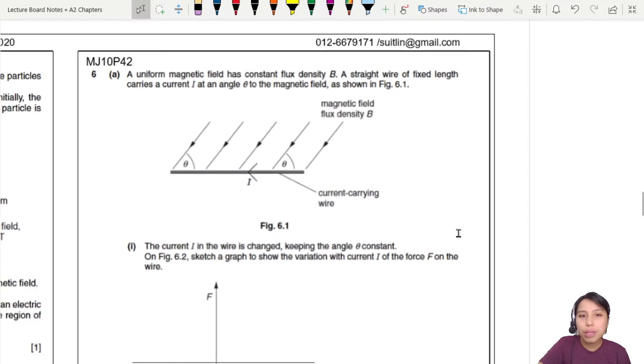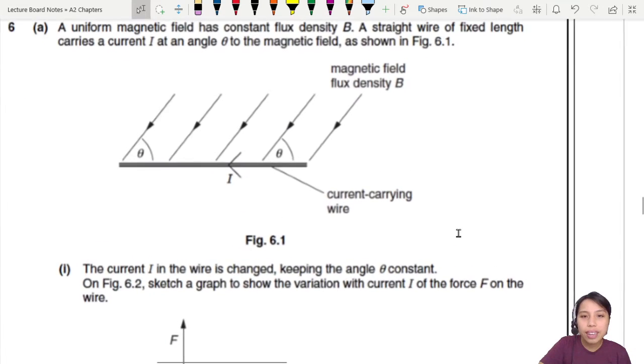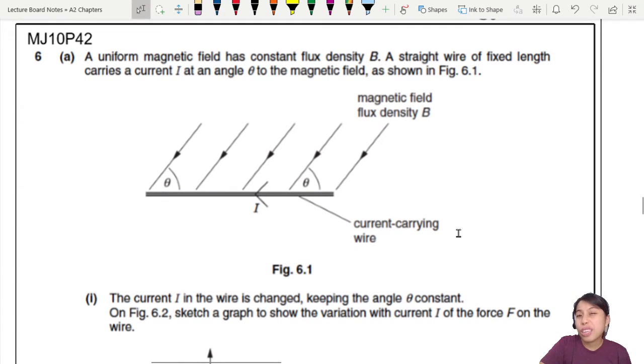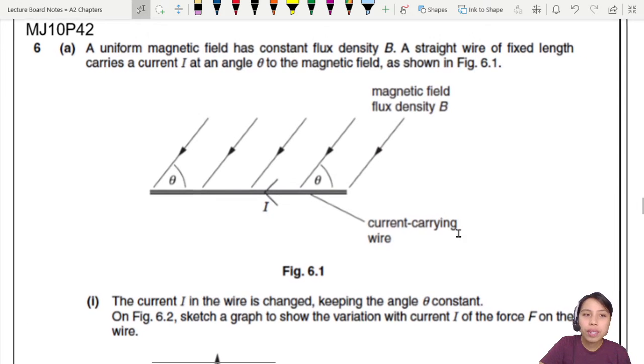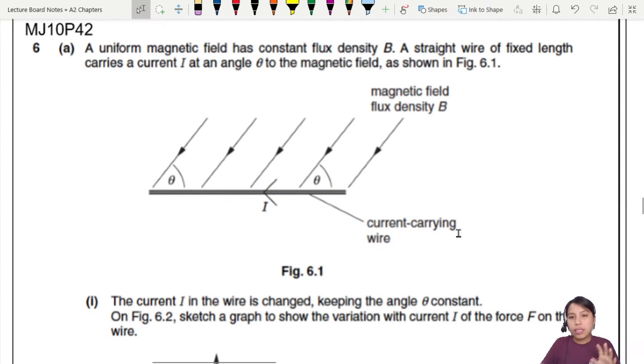So let's look at MJ10P42 on the right side. These things can get pretty complicated but this looks doable. A uniform magnetic field has constant flux density. A straight wire of fixed length carries a current I at an angle to the magnetic field. The magnetic field is tilted, so you have to orient your brain a little bit.